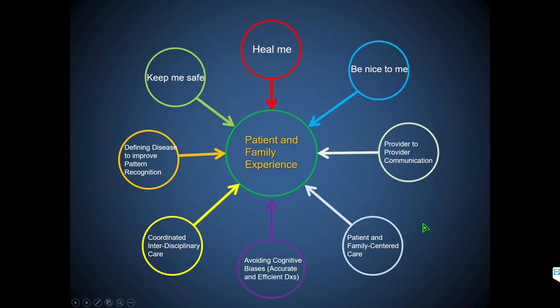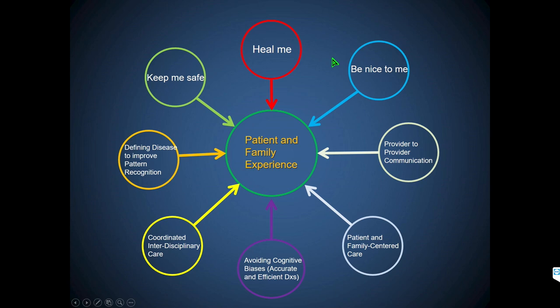Along the way we've learned many lessons. It's very clear that improving provider-to-provider communication, having coordinated interdisciplinary care, bringing families to the center of what we do, and defining the disease process better — so we can recognize patterns and not need advanced studies when the problem is right there — all help keep the child safe. We've also recognized that there's a lot of uncertainty with these conditions, and avoiding cognitive biases is critical — that's the next generation of higher-hanging fruit.